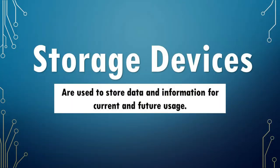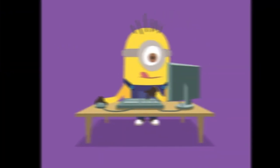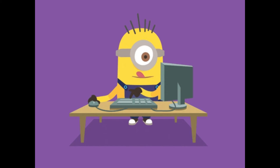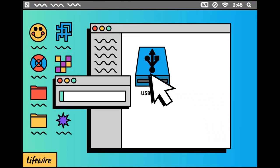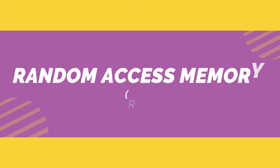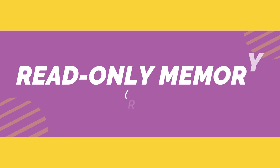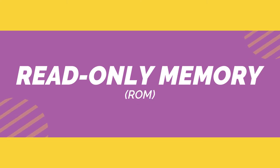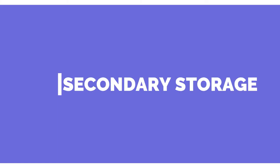Storage devices are used to store data and information for current and future usage. A computer is useless if it cannot store files. There are two classifications of storage devices: primary storage and secondary storage. A primary storage device is found inside the computer and consists of the memory unit — these are the RAM (random access memory), which stores data temporarily and is deleted when the computer shuts down, and the ROM (read only memory), which stores data permanently and is primarily used in the startup process. Secondary storage devices are those we insert or plug into the computer system, such as a floppy disk, hard drive, compact disk, and the most commonly used flash drives.